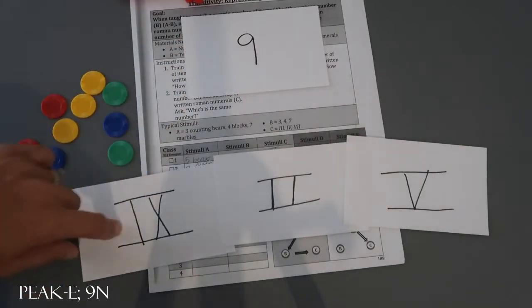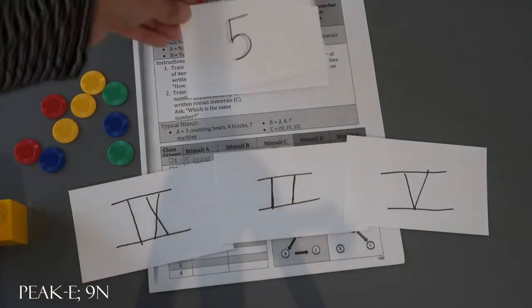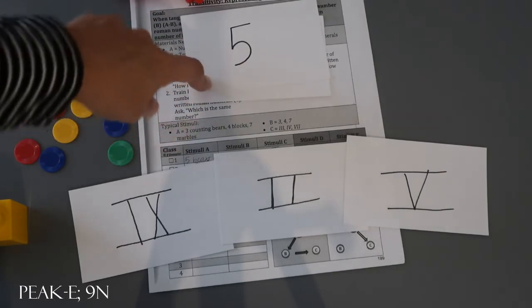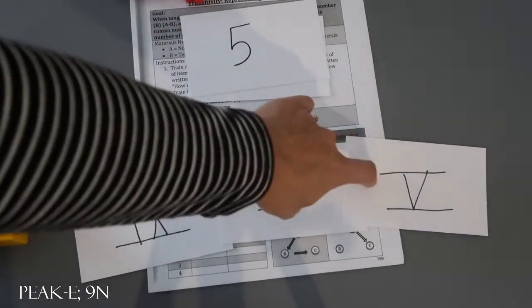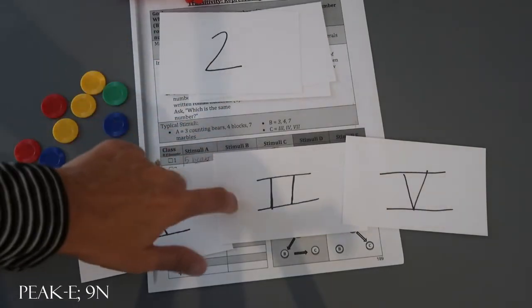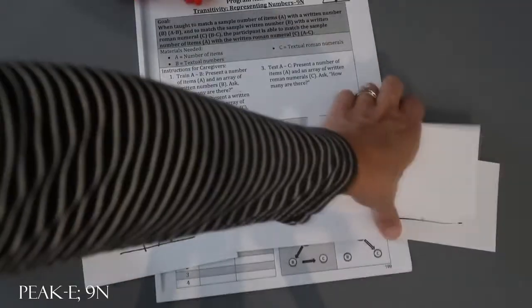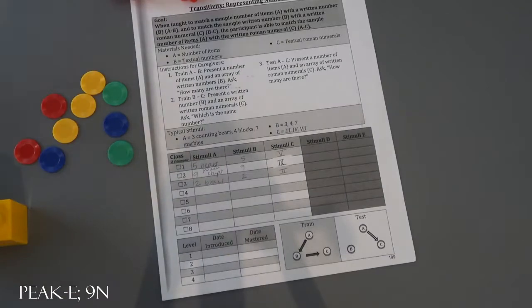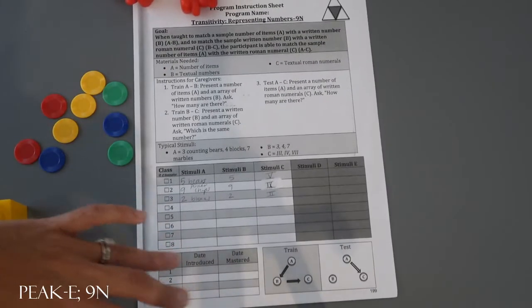This is the same number as this. Then you might shuffle them up. What's the same number as this? That would be the five in roman numerals. Which is the same number as this? That would be an example of each of those trials for B to C. You're going to intermix those in a block of ten.